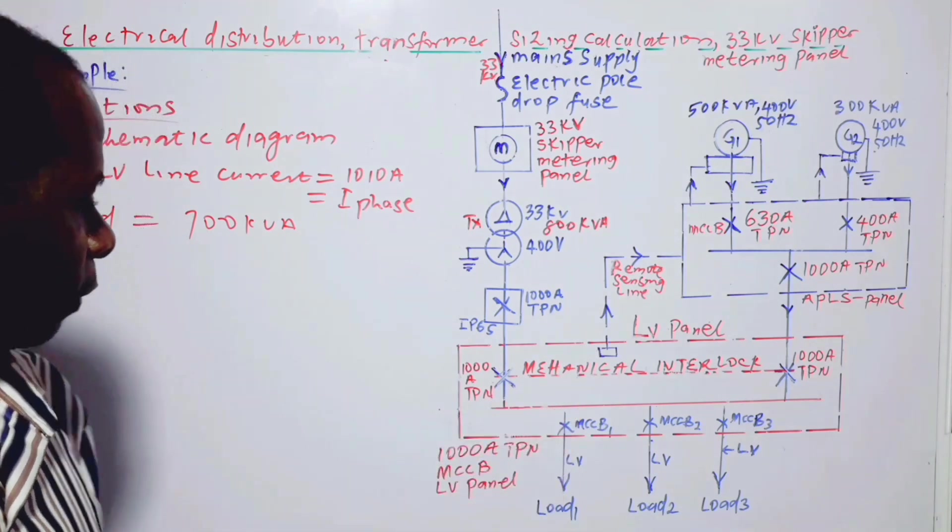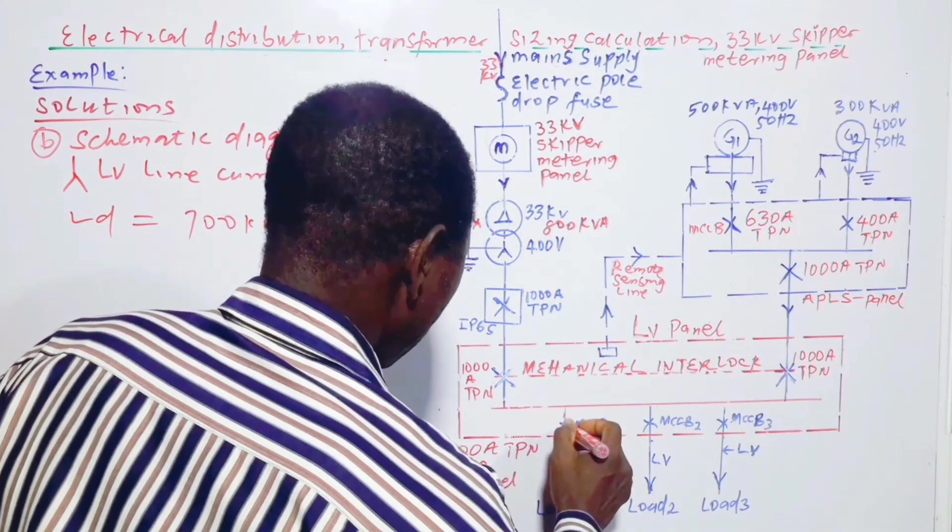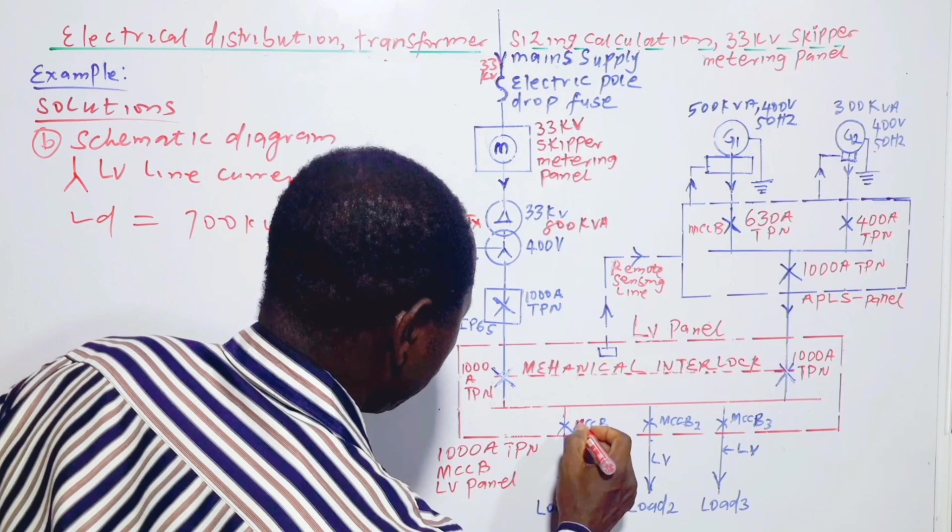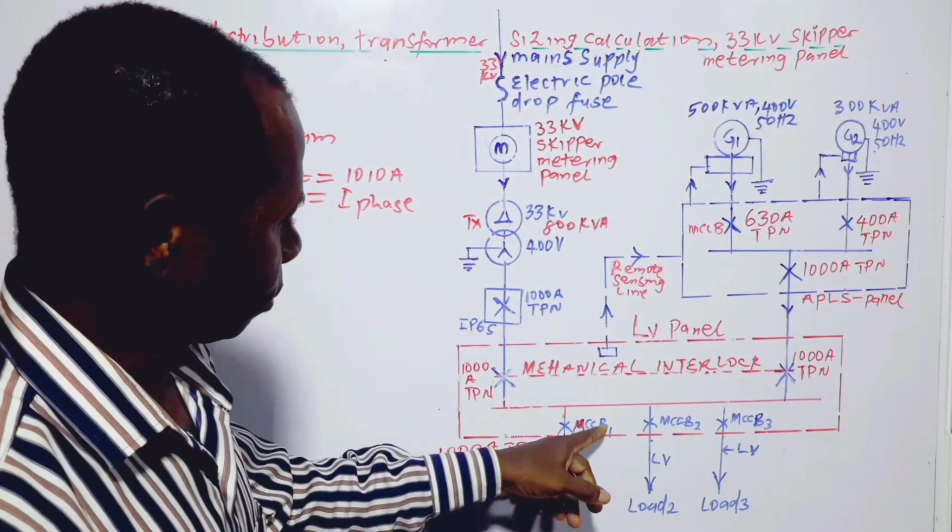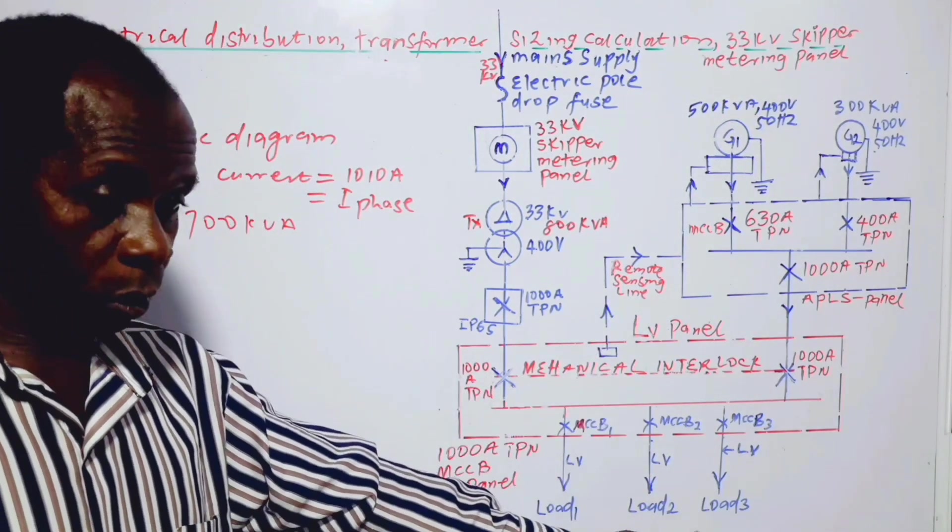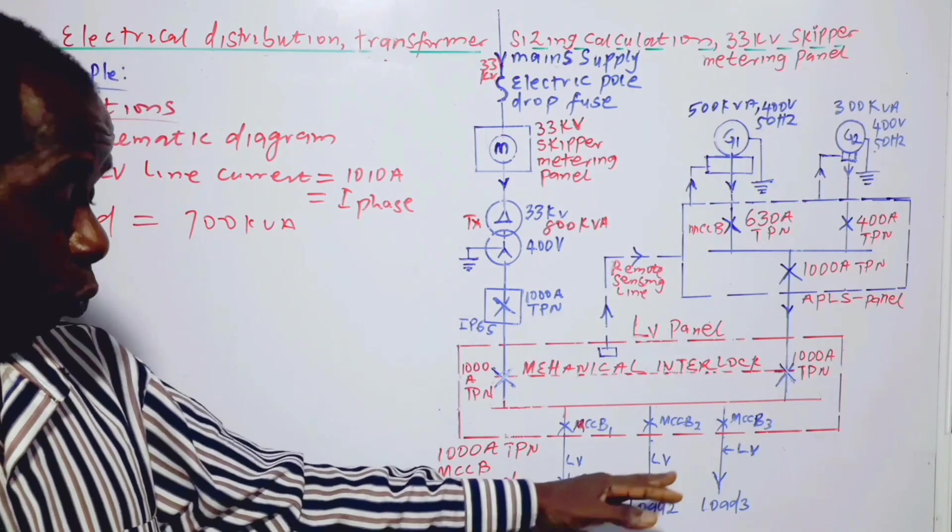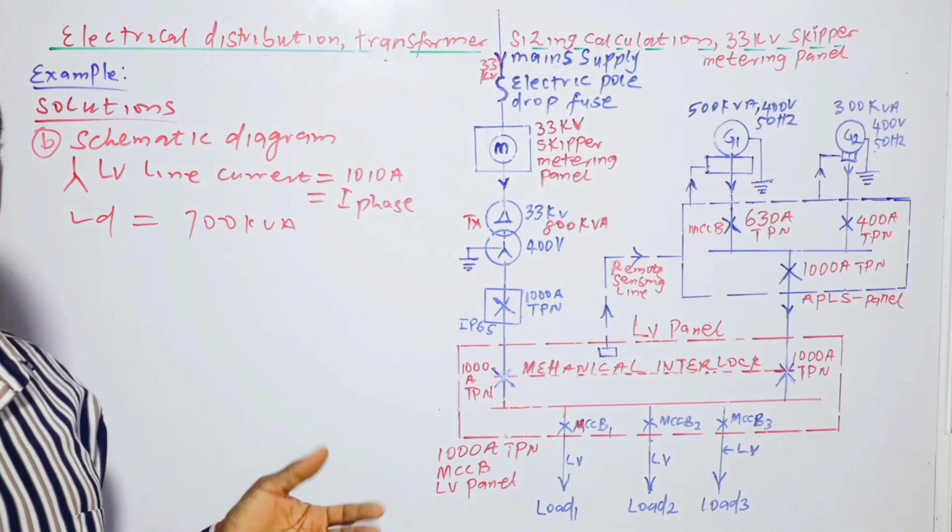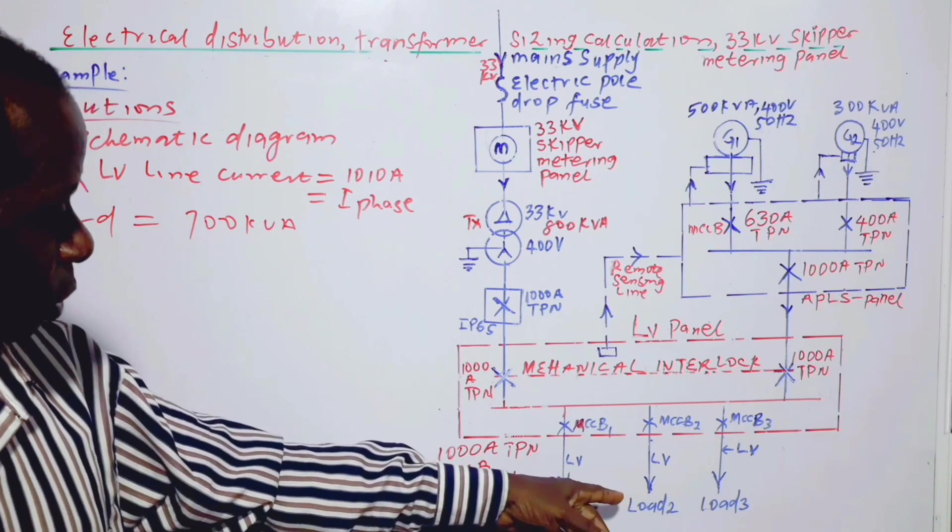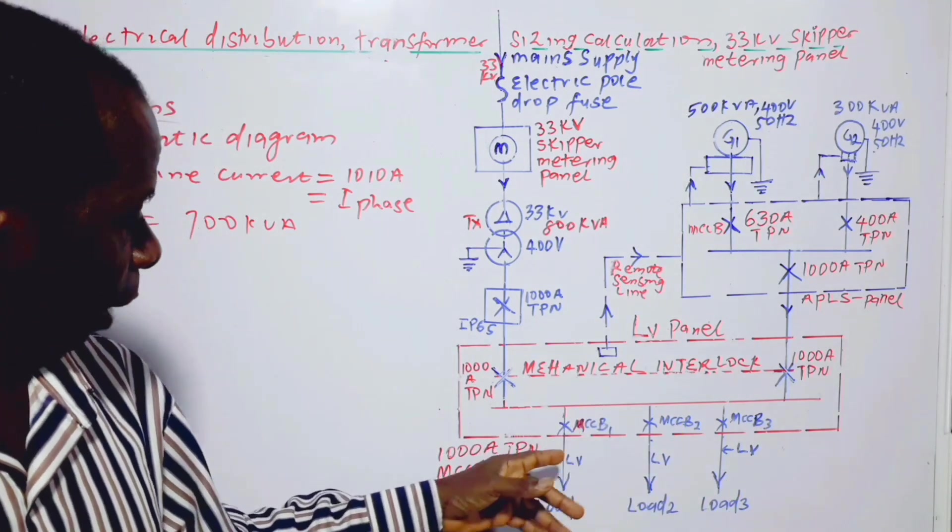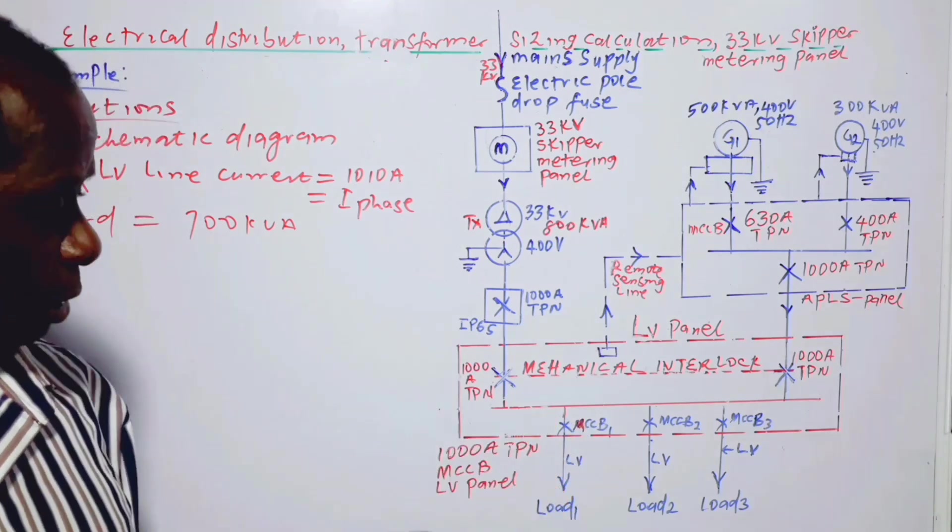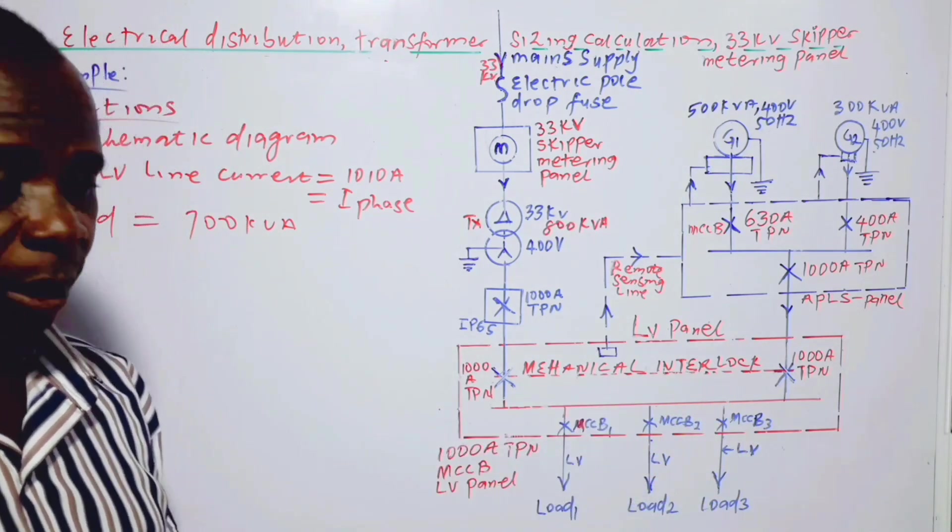So from here we have outgoing circuit breakers. This is MCCB as well, MCCB, MCCB, MCCB3. So they are now going to the loads: load one, load two, load three. So the loads could be distribution bus or some other types of loads. The magnitude of the load will be the one in each case, or the load will be the determinant of the size of the circuit breakers. That's why I'm not putting the size of the circuit breakers there.